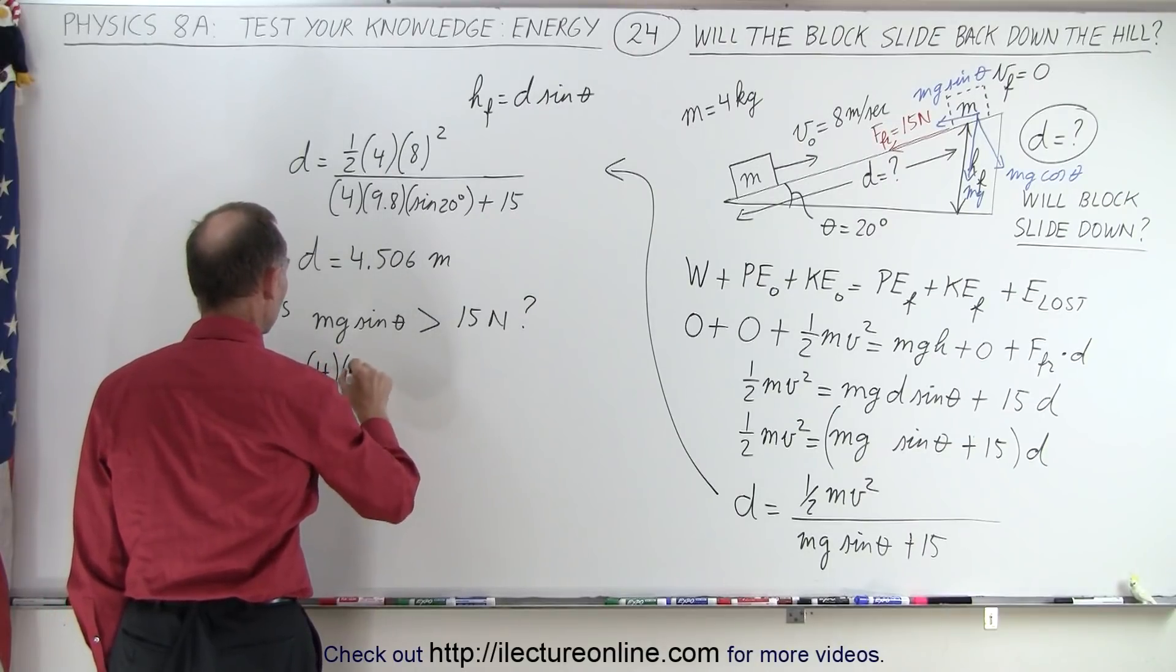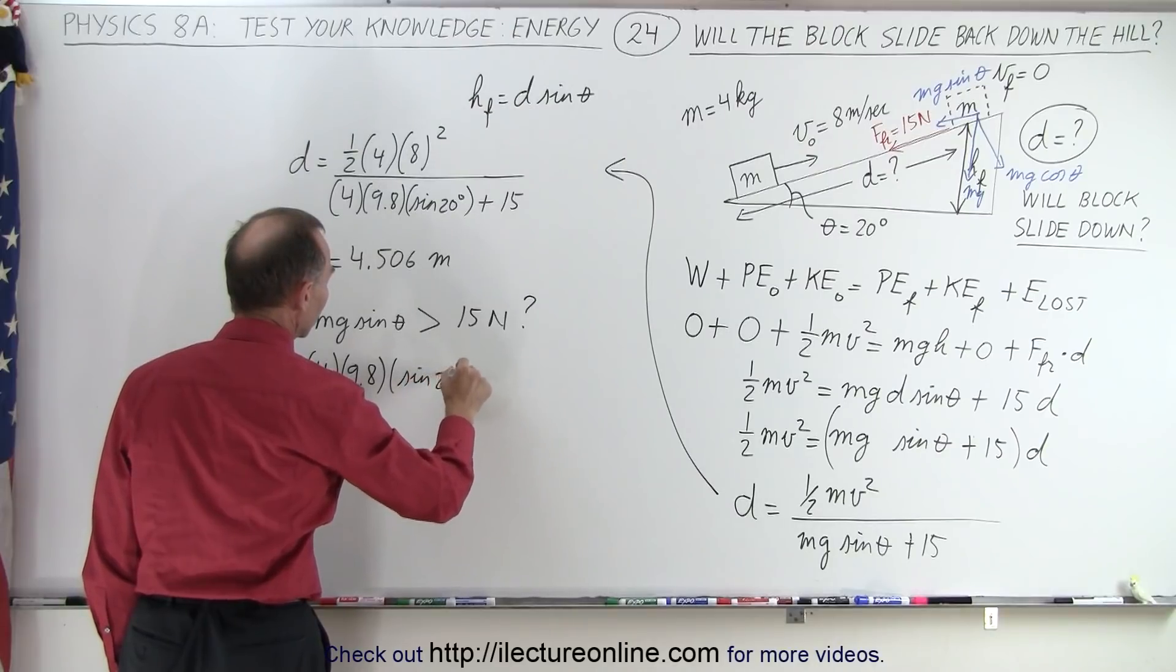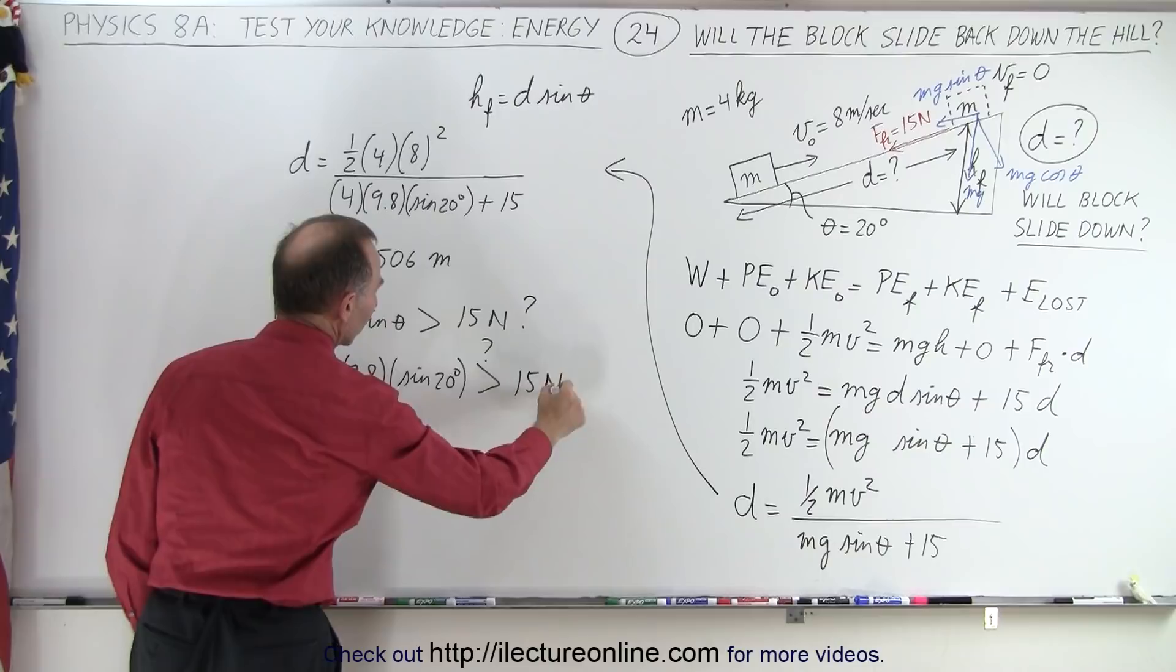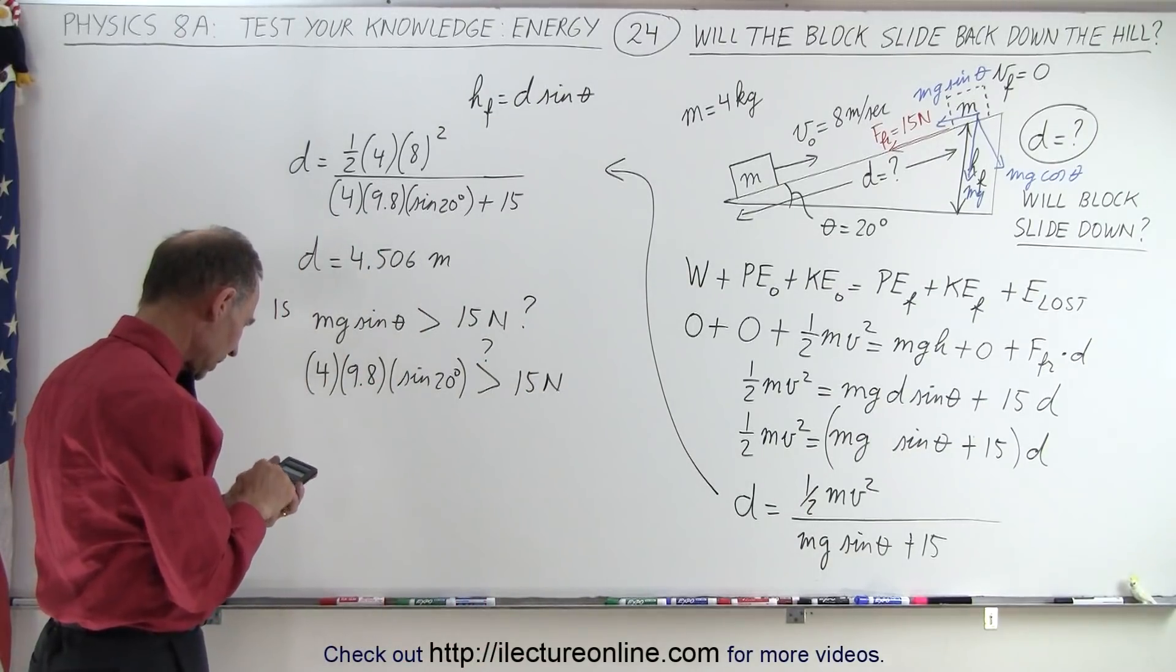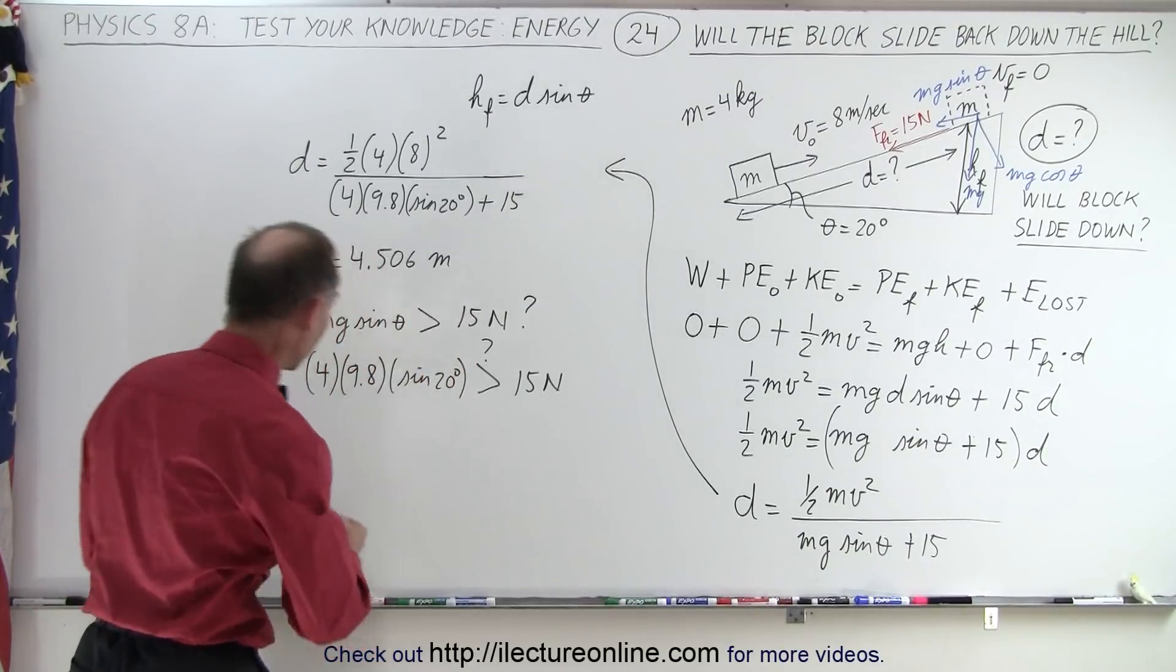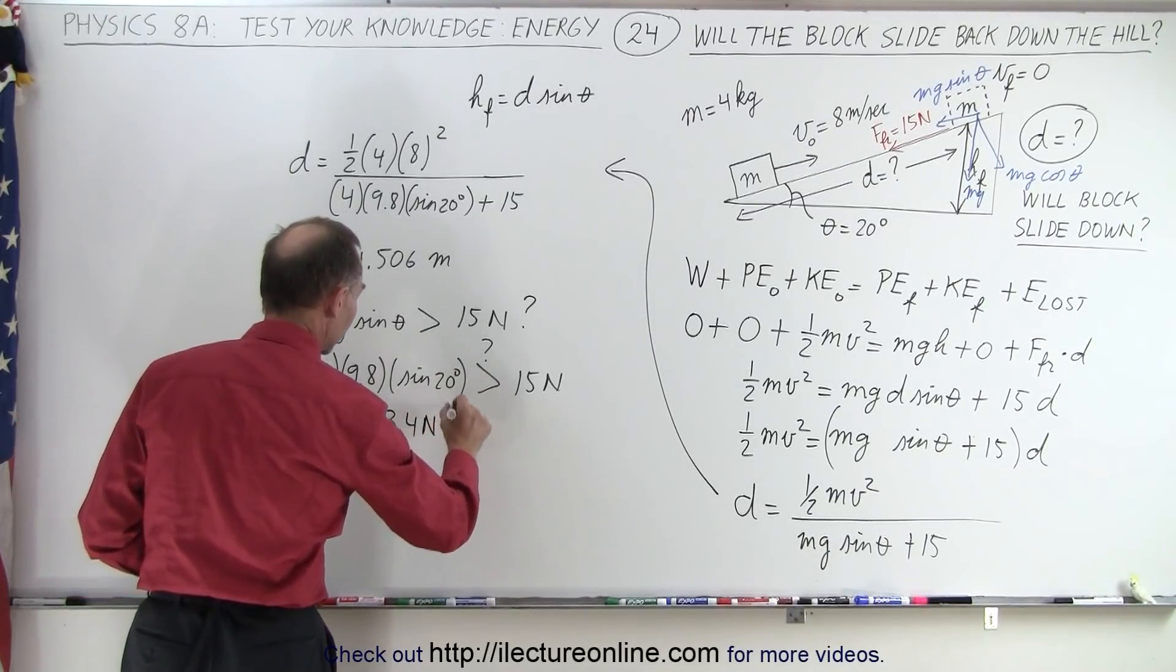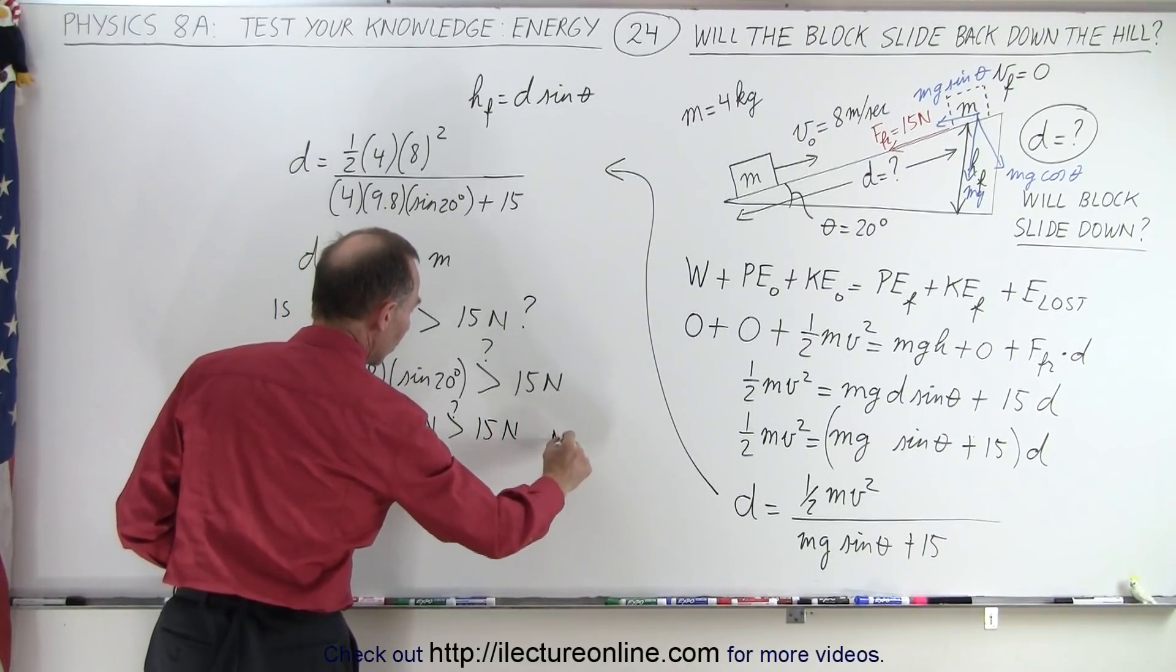So we have m is 4, g is 9.8, and we multiply times the sine of 20 degrees. Is that greater than 15 newtons? Alright, so we have 4 times 9.8 times sine 20 equals, that's 13.4 newtons. So 13.4 newtons, is that greater than 15 newtons? And the answer, of course, is no.